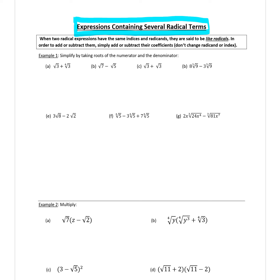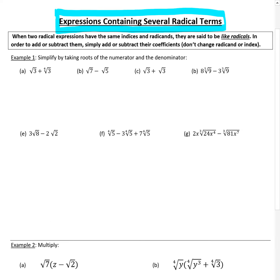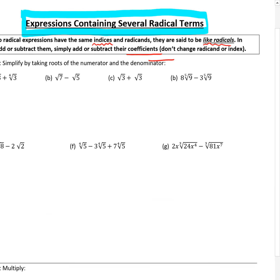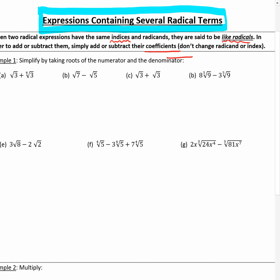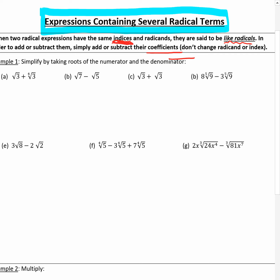So even though it's called 'expressions containing several radical terms,' if you have several radical terms adding or subtracting, you might want to add or subtract them. When two radical expressions have the same indices and radicands, they are said to be like radicals. In order to add or subtract them, you add or subtract their coefficients — whatever number is in front of the root. You do not change the radical or the index. They have to have the same index AND the exact same thing inside their roots. If one of those things is off, you can't add or subtract them.